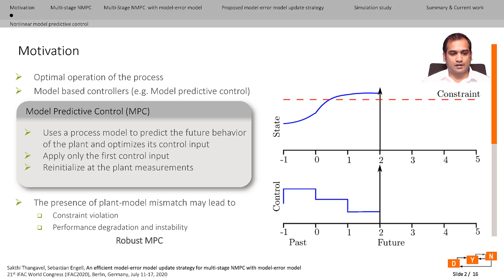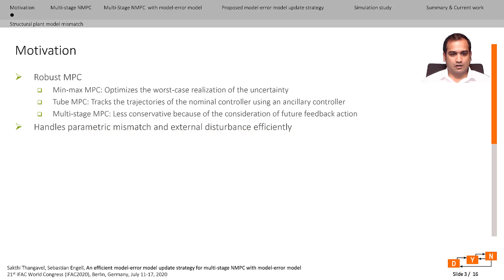Such situations can be avoided using robust MPC approaches. The most prominent ones are: the MinMax MPC, which optimizes for the worst-case realization of the uncertainty; the tube MPC, which consists of a nominal controller giving the nominal trajectory and an ancillary controller that tracks the nominal trajectory in the presence of uncertainty; and the multi-stage NMPC, which models uncertainty by a tree of discrete scenarios. The multi-stage NMPC takes into account future feedback information, hence it is less conservative when compared to other robust NMPC approaches.